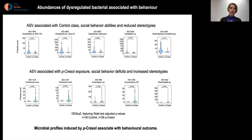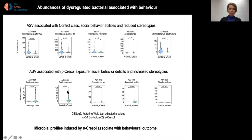On the other hand, ASVs associated with paracresol exposure, social behavior deficits, and increased stereotypism — such as two ASVs pointing to Trissimonas muris — were significantly increased in paracresol-treated animals. The microbial profiles induced by paracresol associated to a certain extent with behavioral outcome, though this is merely an association study and does not imply causation.